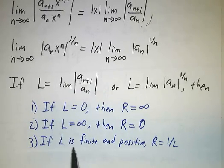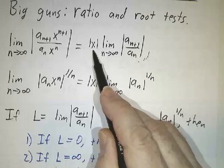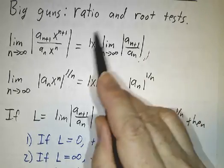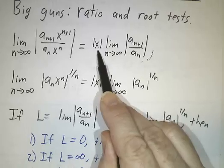If L is a finite number, then the radius of convergence is its reciprocal. Because as long as the magnitude of x is less than 1 over L, then this is going to be less than 1. If the magnitude of x is bigger than 1 over L, then this is going to be bigger than 1.